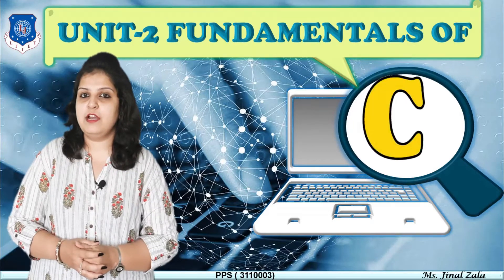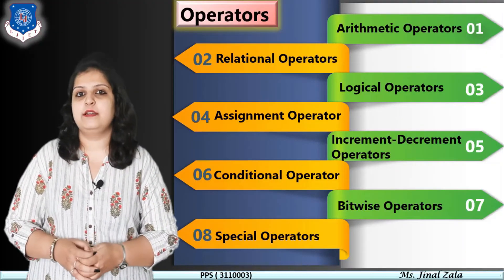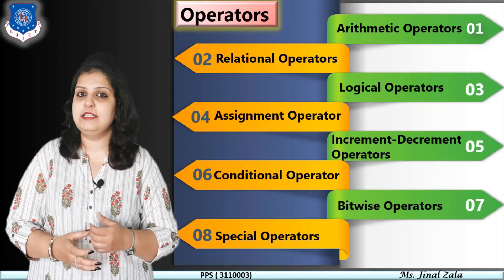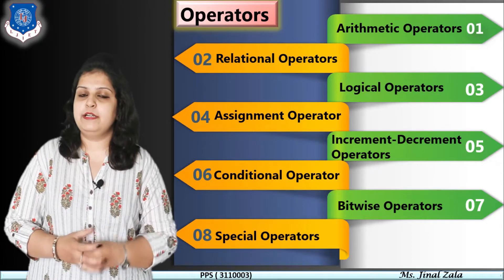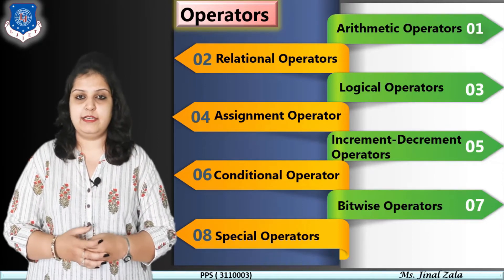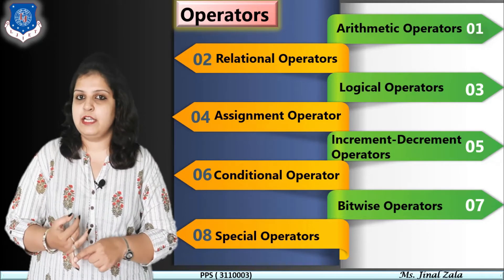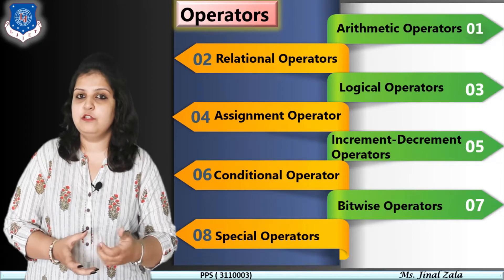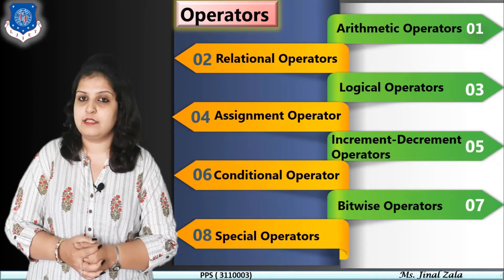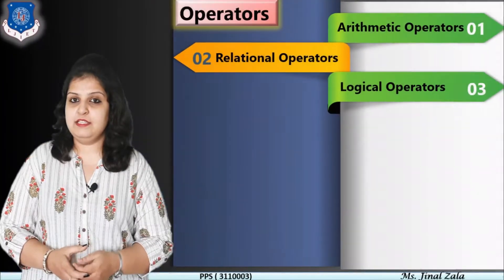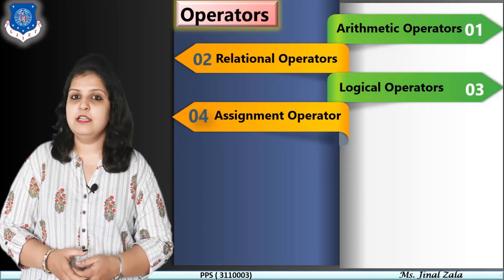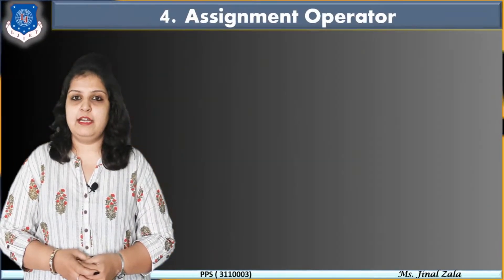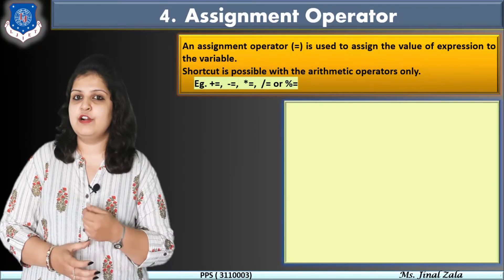In the previous video, we had already started our topic on operators. There are eight different types of operators to learn in this module. The first three — arithmetic operators, relational operators, and logical operators — are already completed. Today we are going to start with the fourth operator: the assignment operator, whose sign is the equal-to sign.